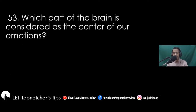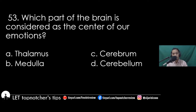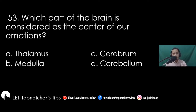Item 53: Which part of the brain is considered the center of our emotions? A) thalamus, B) medulla, C) cerebrum, D) cerebellum. The best answer is letter A, thalamus.